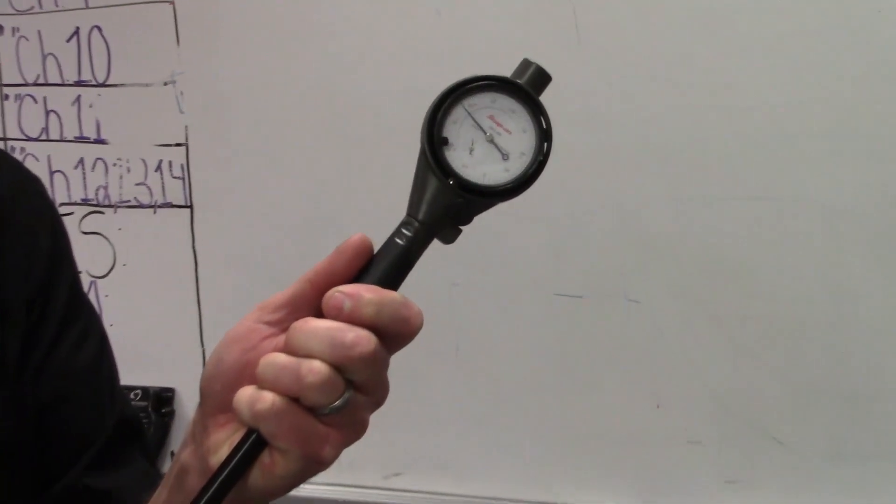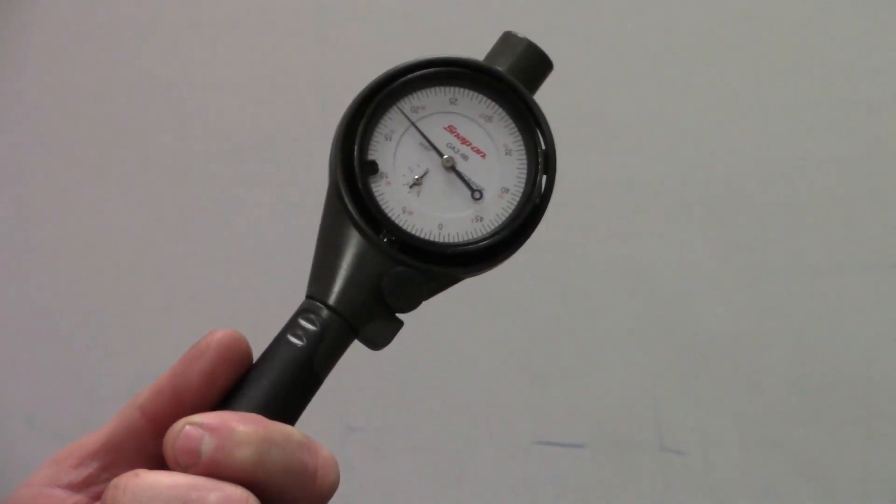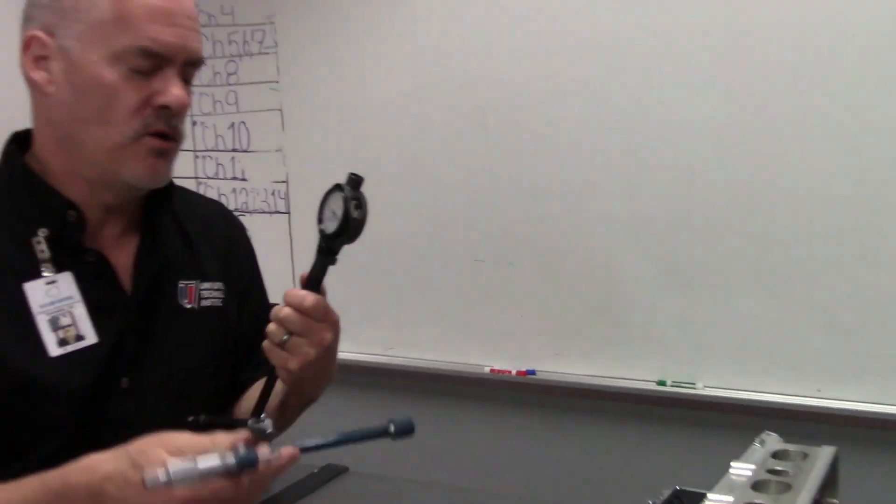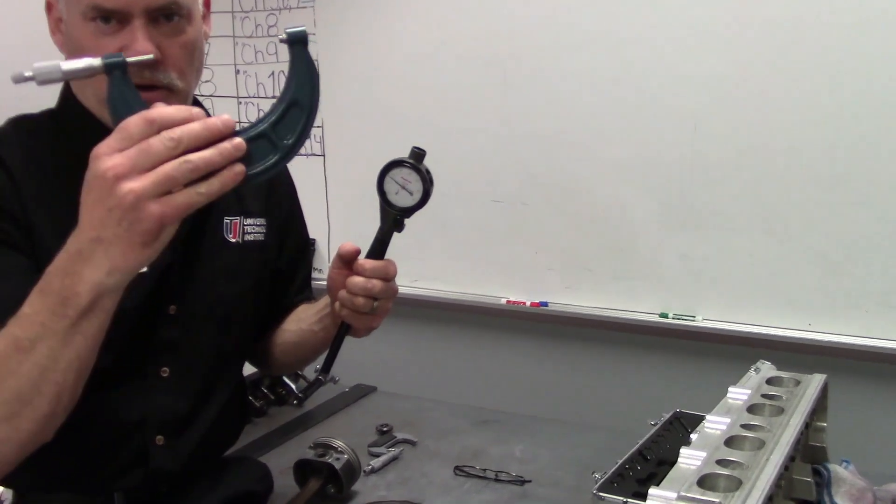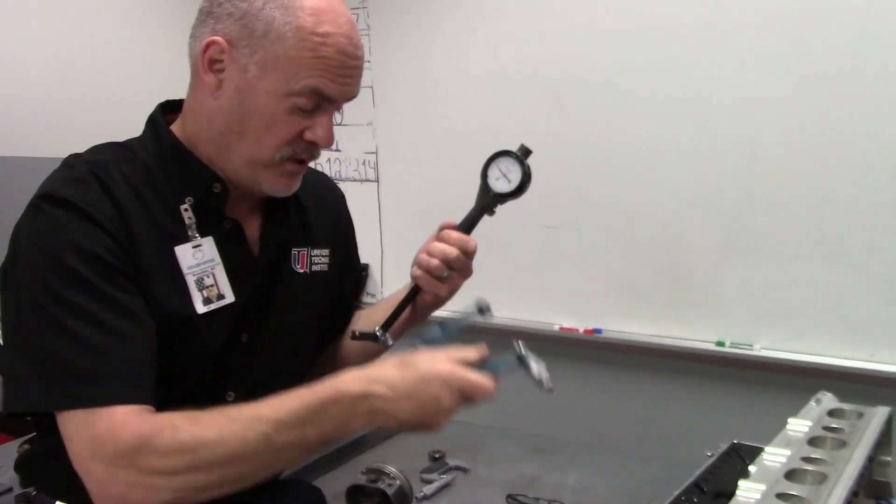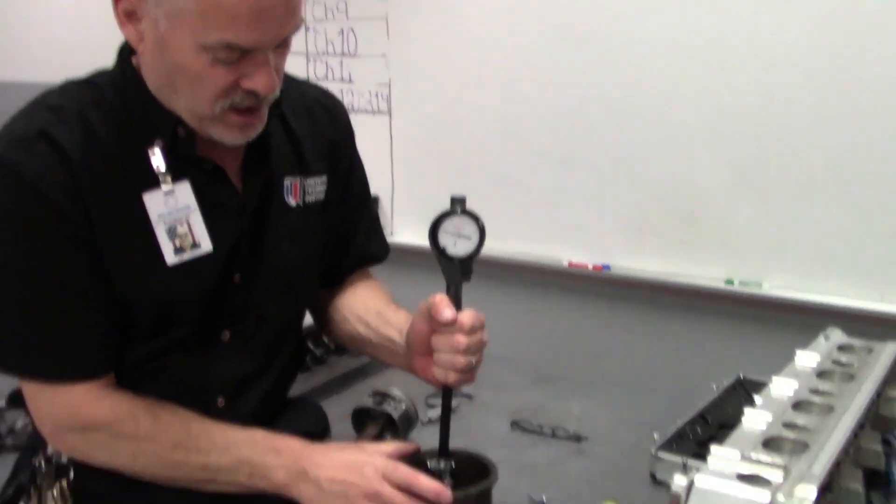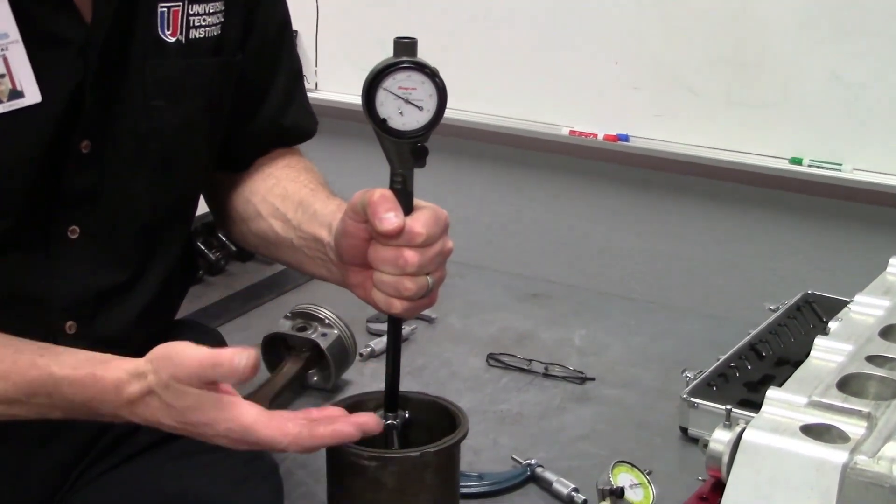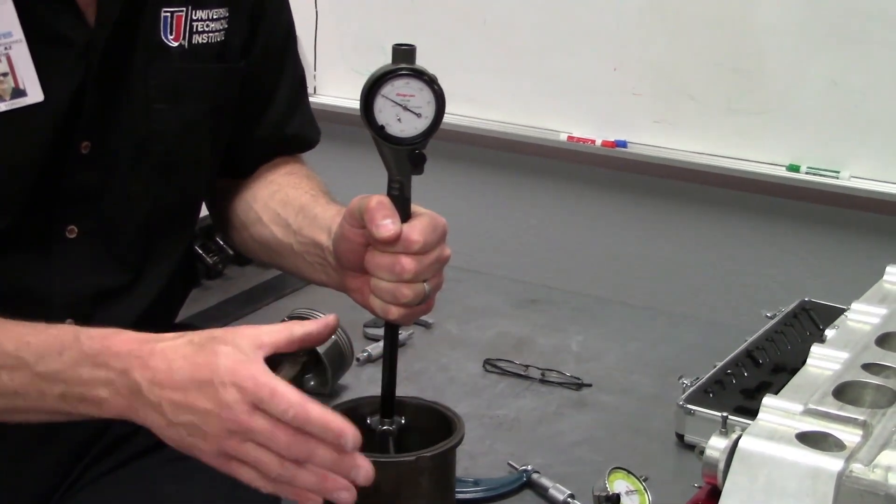Once we get this between the two fingers of the micrometer, we just zero out the dial bore gauge. If we zero it out, we know that the zero on our indicator is matching what our spec is that we set here. Then we just put the dial bore gauge in and we compare that to the bore diameter to see if it's in spec size-wise or not.